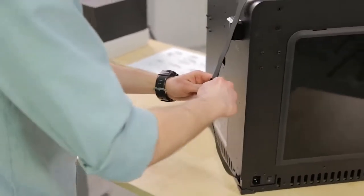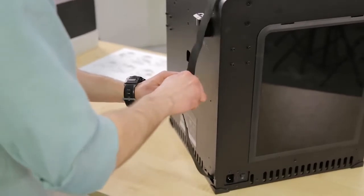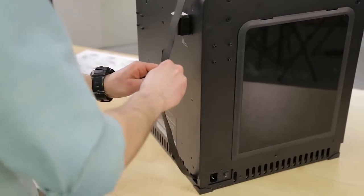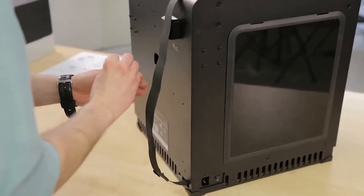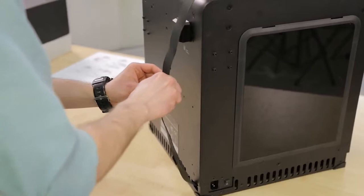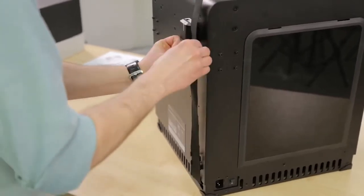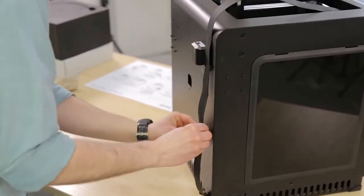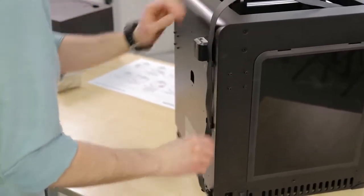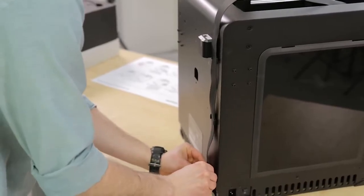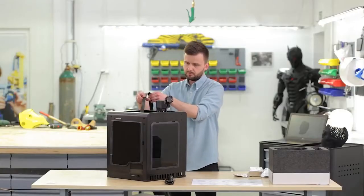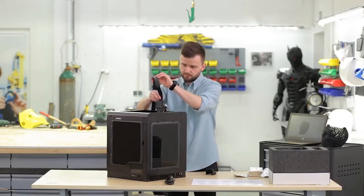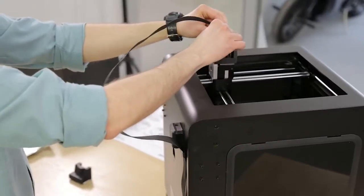First, attach the extruder cable to the holes at the back of the printer using the clamps from the starter kit. Remove the extruder top cover, an element which protects the cable from wearing off. Plug the extruder cable into the PCB.